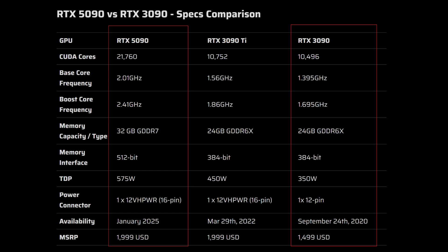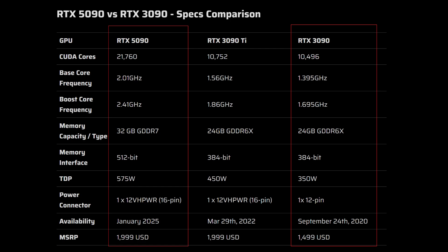For the 3090, it is still powerful. However, it might struggle with larger models. For the 5090, it is the latest NVIDIA flagship GPU. It has more CUDA cores, higher VRAM, and faster memory bandwidth. Let's see how they compare with each other.